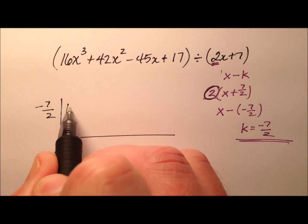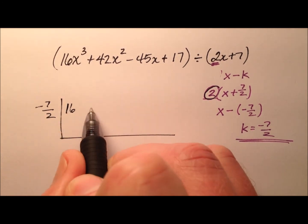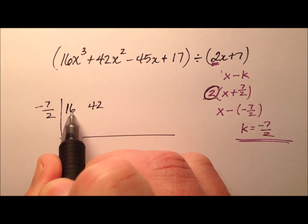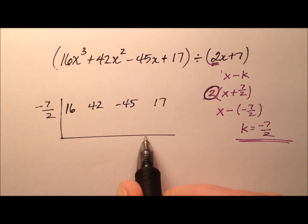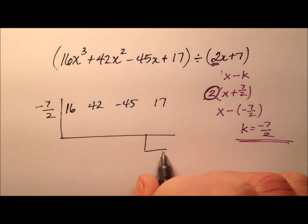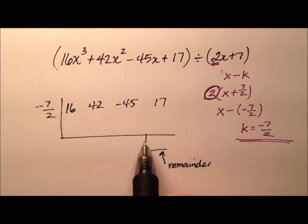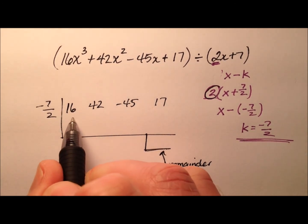So I have my 16 for my cubic term, 42 for my quadratic term, negative 45 for my linear term, and 17 for my constant. And right here, I'll go ahead and put a spot for my remainder. I like to box them, keep them kind of separate so we know what's what.